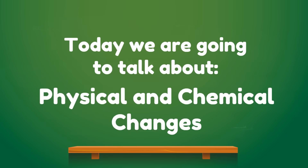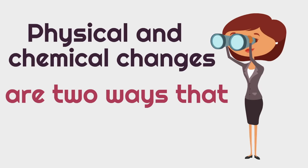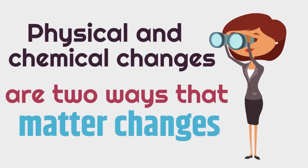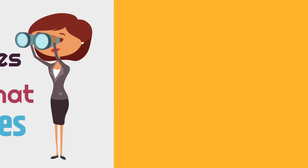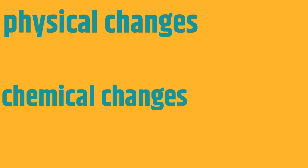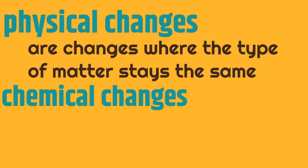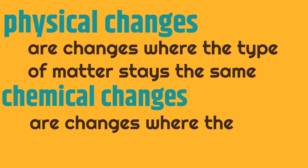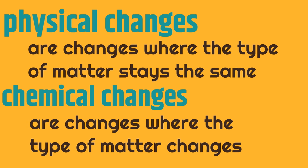Just to remind you, today we are going to talk about physical and chemical changes. Physical and chemical changes are two ways that matter changes. Remember, all the stuff in the world is matter — anything that takes up space is matter. Physical changes are changes where the type of matter stays the same. Chemical changes are completely different, because chemical changes are changes where the type of matter itself changes.